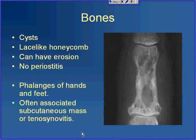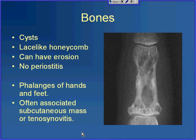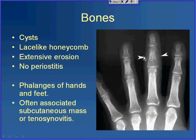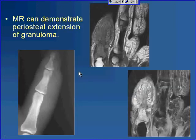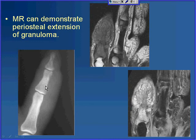Typical bony involvement, particularly in the phalanges of the hands and feet, consists of multiple cysts within the bone giving a lace-like honeycomb appearance. There can be erosions, but periostitis tends to be absent. Associated subcutaneous masses or tenosynovitis can occur. In one example, there is a soft tissue mass and intramedullary cysts with that lace-like honeycomb appearance. In another example, soft tissue swelling and erosion along the radial aspect are visible with the same typical lace-like pattern. MR can demonstrate soft tissue changes due to periosteal extension of the granuloma outside the medullary cavity. One patient initially thought to have gout had a tiny cyst and soft tissue mass that was proven sarcoid on biopsy.